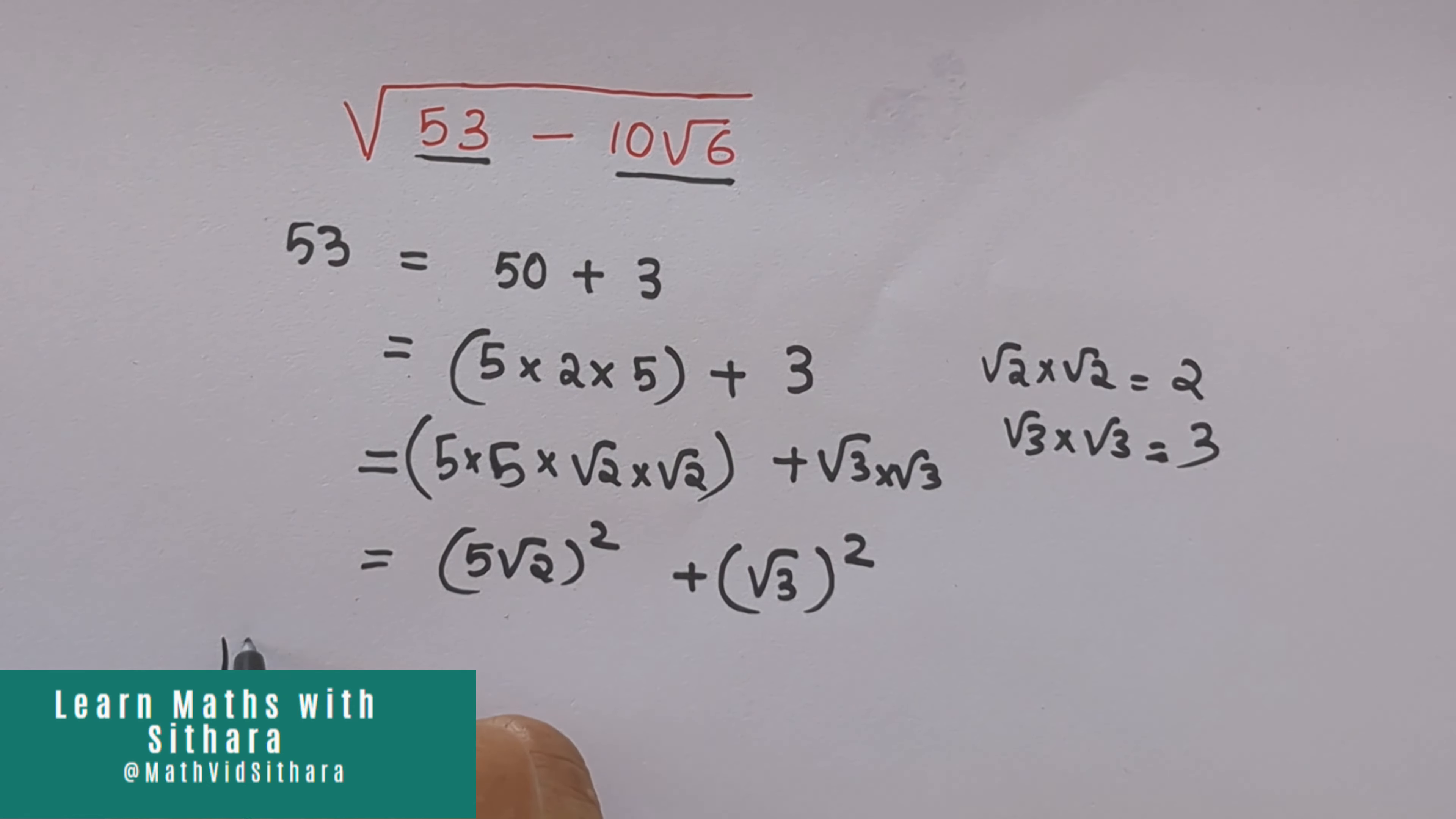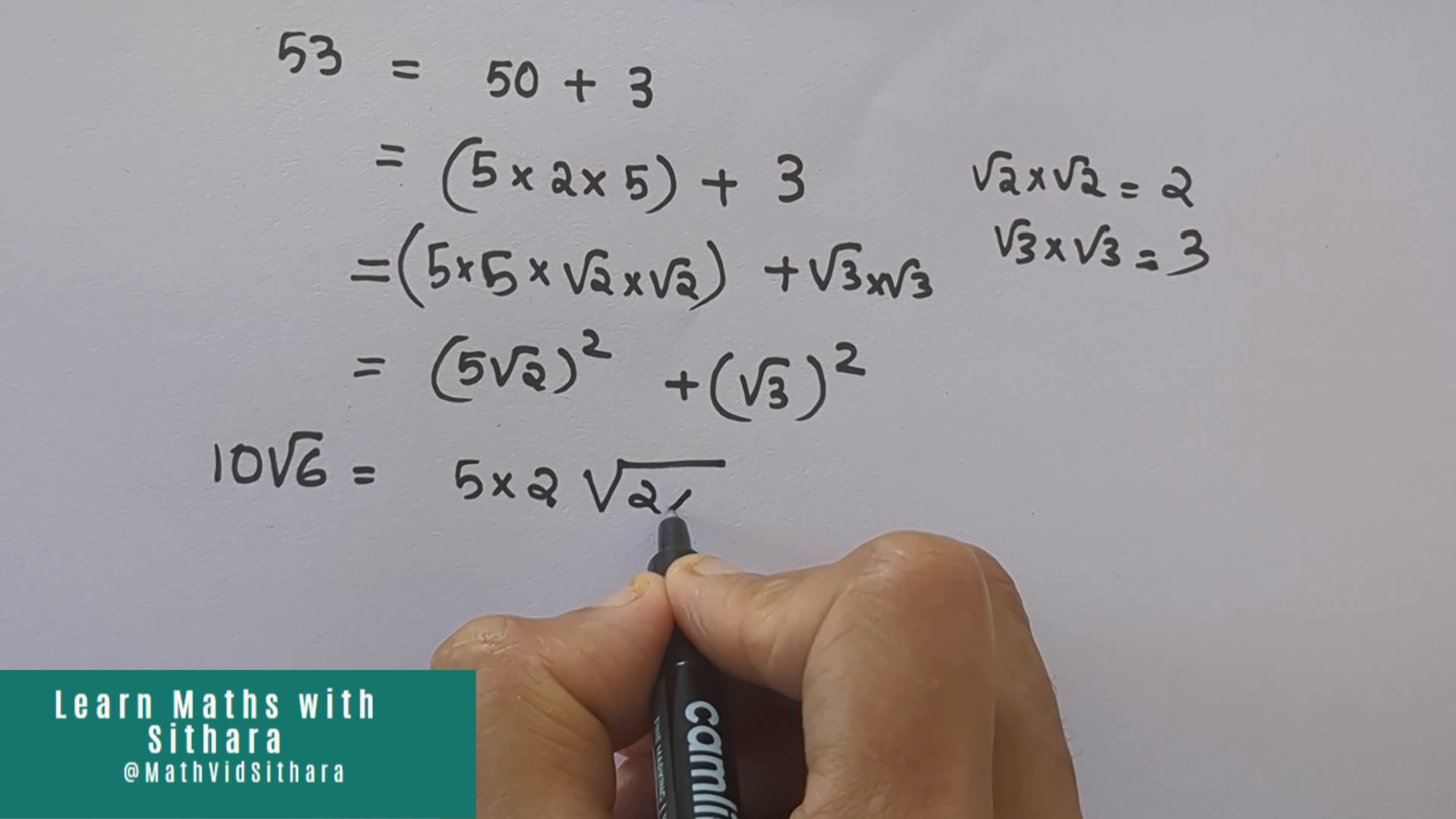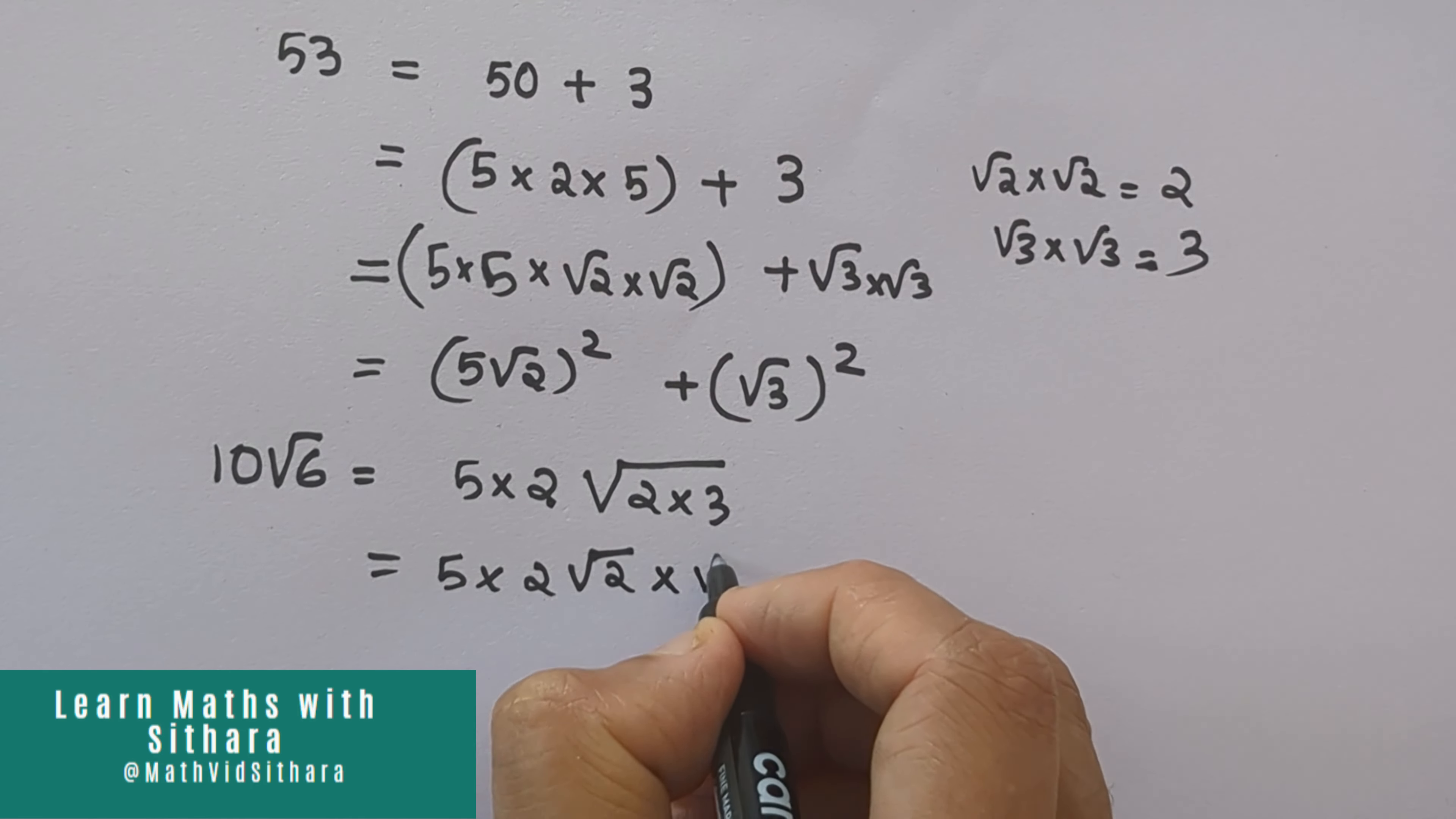Next term, 10 root 6. 10 root 6 can be written as 2 into 5 into root of 2 into 3, which is equal to 5 into 2 into root 2 into root 3.